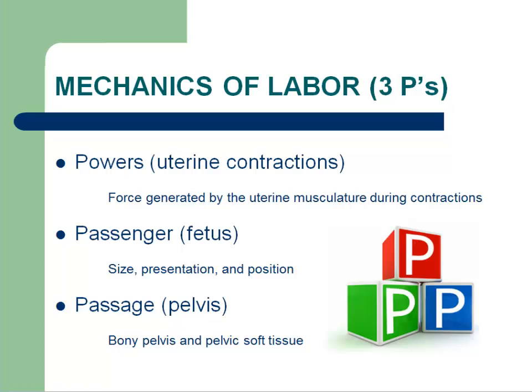Labor is traditionally assessed in terms of the three P's: the powers, the passenger, and the pelvis. The powers, or uterine contractions, must be strong enough to affect cervical change. The passenger, that is the fetus, must not be too large and must be positioned correctly in the pelvis. The passage, or the birth canal, must be of normal shape and size to allow the fetus to progress through to delivery. If labor is not progressing normally, consideration of the three P's can help determine the etiology of the abnormal labor pattern.